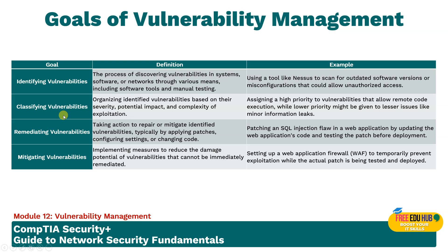Classifying vulnerabilities means organizations identify vulnerabilities based on severity, impact, and complexity of exploitation. Once vulnerabilities are identified, they need to be classified according to their severity, potential impact, and complexity of exploitation. Classification helps in prioritizing vulnerabilities, ensuring that those posing the greatest risk are addressed first. This step is vital for efficient resource allocation and effective risk management. For example, assigning high priority to a vulnerability that allows remote code execution while giving lower priority to minor information leaks.